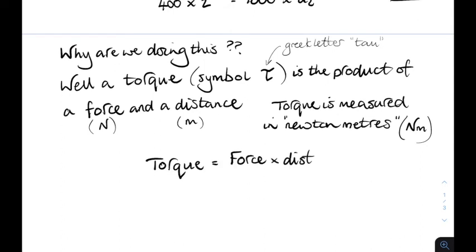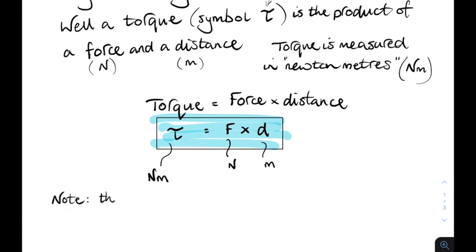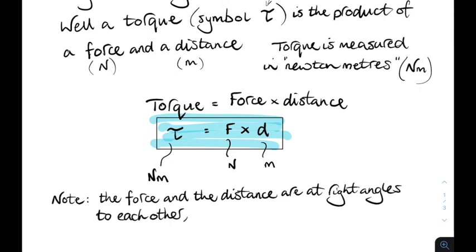We write it in words. Torque equals force times distance. So tau equals F times D. Sometimes it's written as F times R. Where R is the radius of the turning circle. In fact, I think on your relationship sheet, it's tau equals F times R.